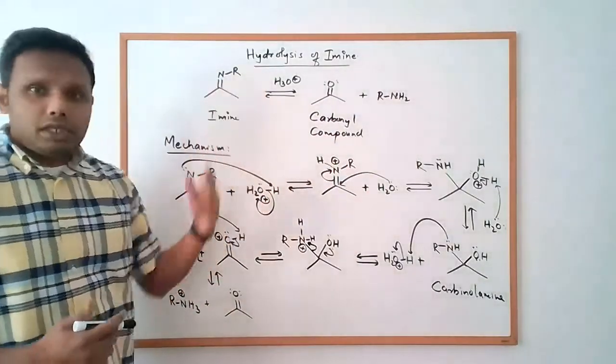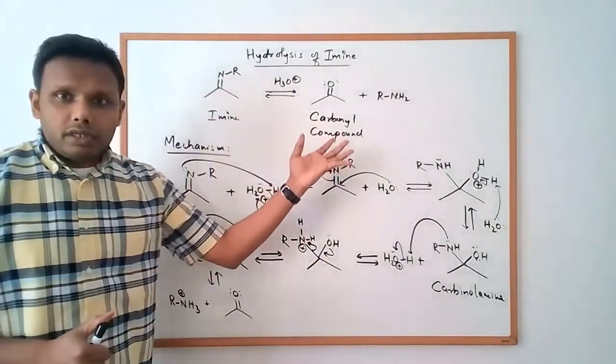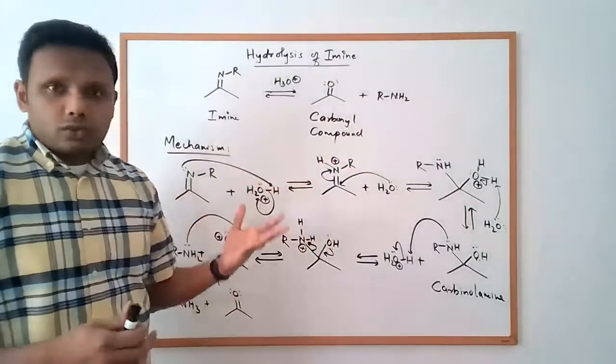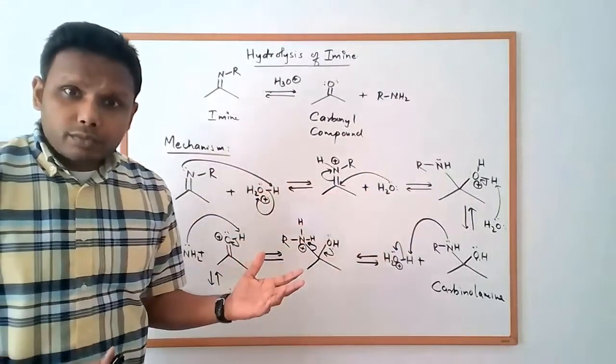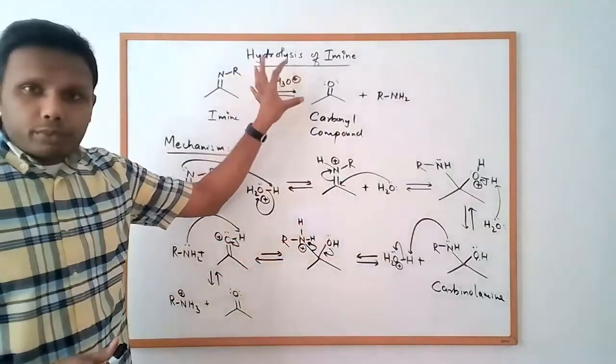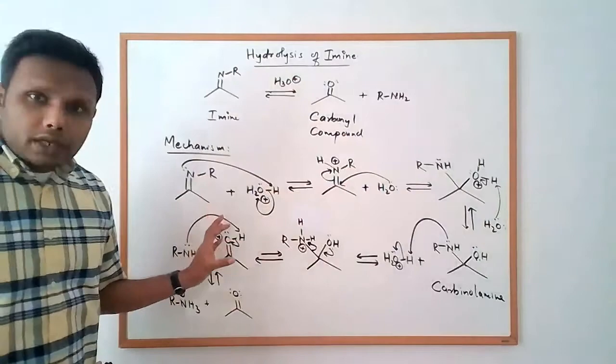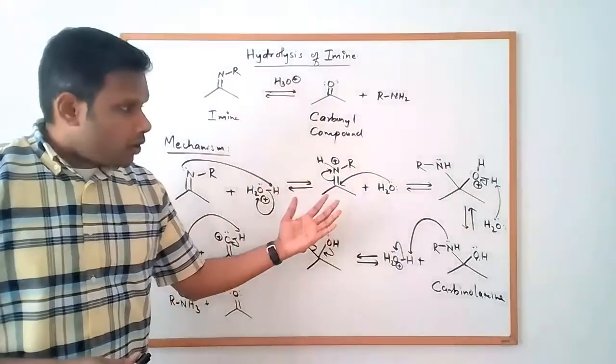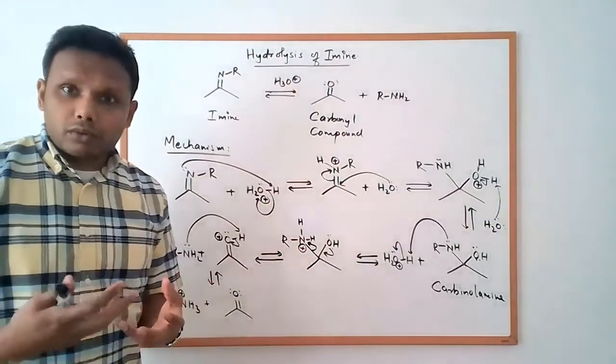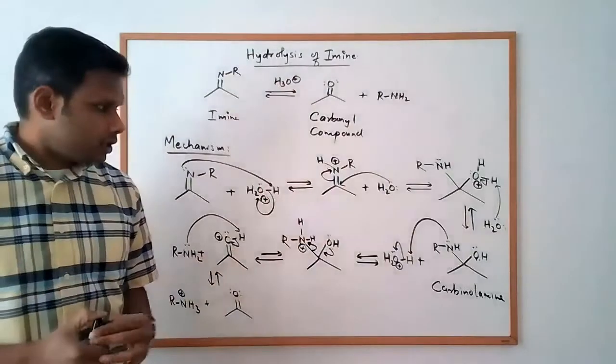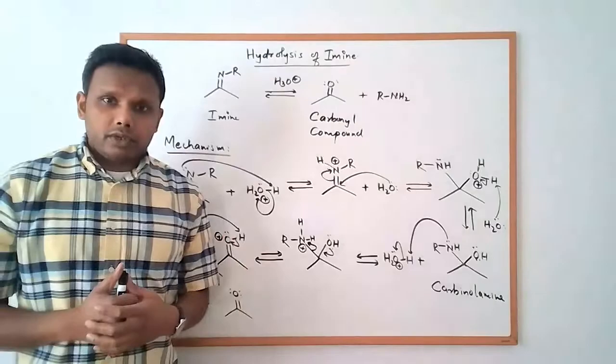So that is the overall mechanism of an imine hydrolysis that converts an imine back into the carbonyl compound and the amine. One thing I would like to point out with these mechanisms is because since we are operating under acidic conditions, we do not have any negative charges on any of the intermediates here so you avoid the formation of negative charges or strong bases or nucleophiles under these conditions. I hope everyone finds that video helpful, bye.